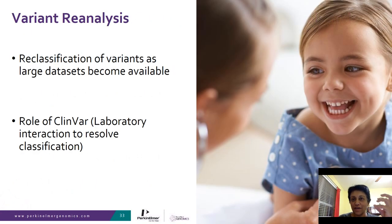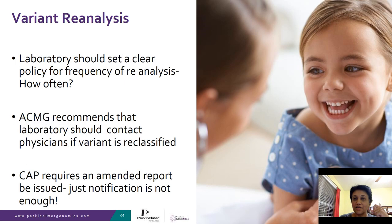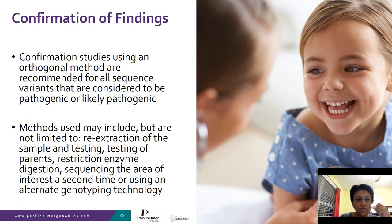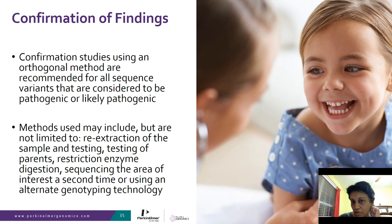Regarding variant re-analysis: when a report is negative or returns a VUS, the physician should actively call the lab about six months after receiving the report to ask for reclassification. Many new databases are continuously emerging, and updating variant interpretation is important. Confirmation of clinical findings — if you're not fully convinced that the gene matches the patient's clinical features — should prompt you to contact the laboratory and request confirmatory testing.